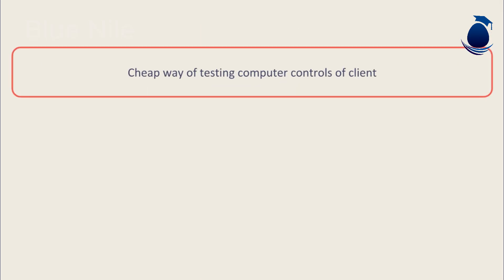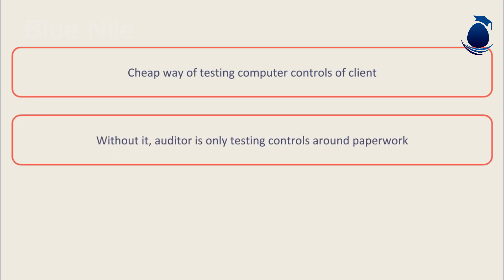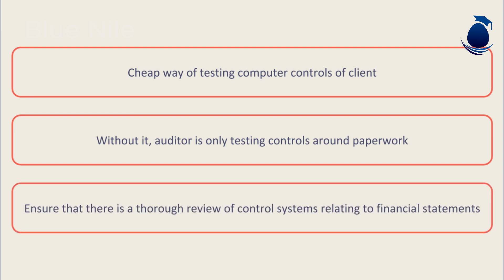Test data is a cheap way of testing computer controls, as it only requires the auditor and their skills. Without test data, the auditor is only testing controls around the paperwork produced from the system, plus any manual controls. This method ensures a thorough review of the entire control systems relating to the financial statements, and not just some of it.